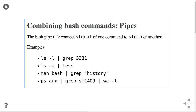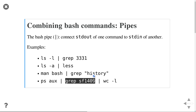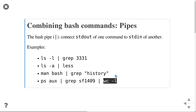You can actually chain multiple pipes. Here I get the processes on the system, filter the processes owned by myself using my username, and then count the number of lines. So this command together shows how many processes I'm running on my computer. All of these tools have one specific function, but by combining them you get exactly the information you're interested in.